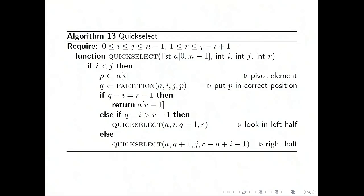In other words, you've put the pivot in its correct place inside that sublist. And if it's the rth element, then you're done because everything to the left is less than or equal to it, everything to the right is greater than or equal to it, so it must be the right element.